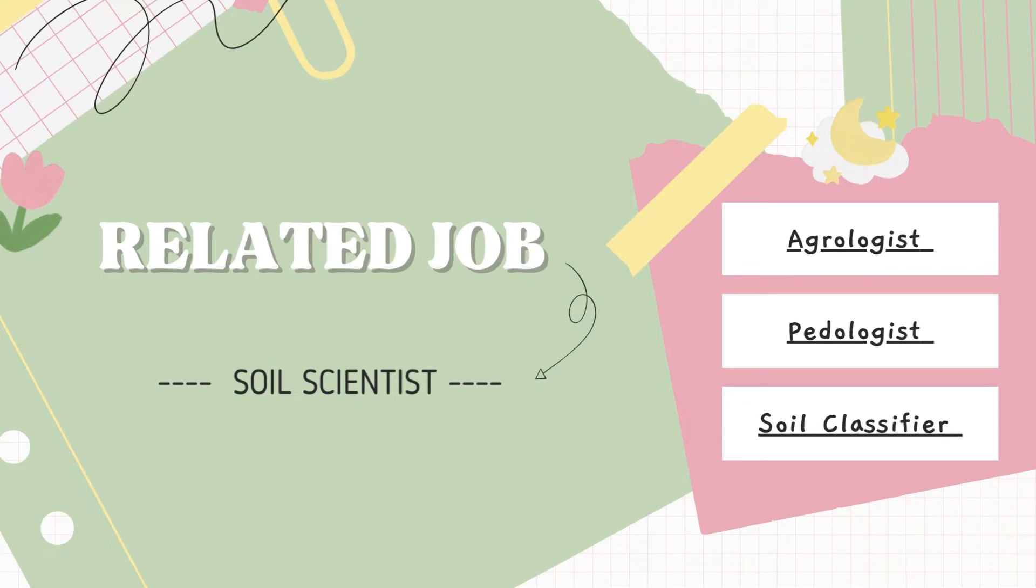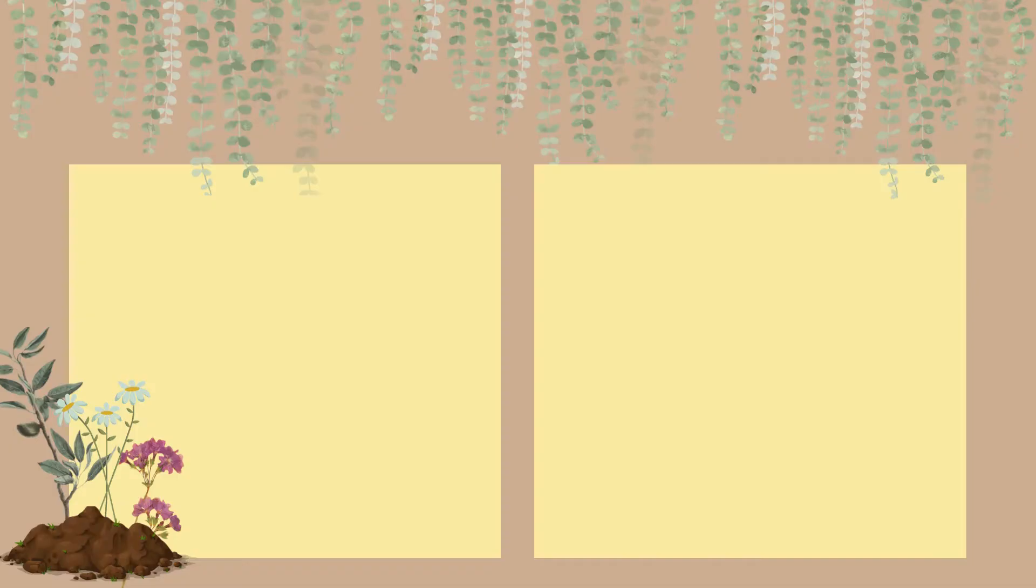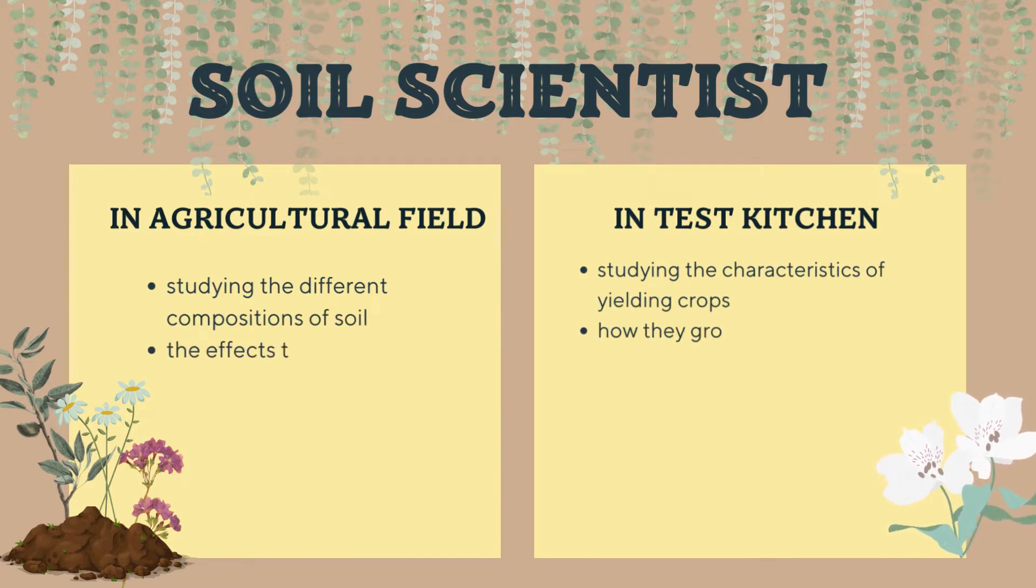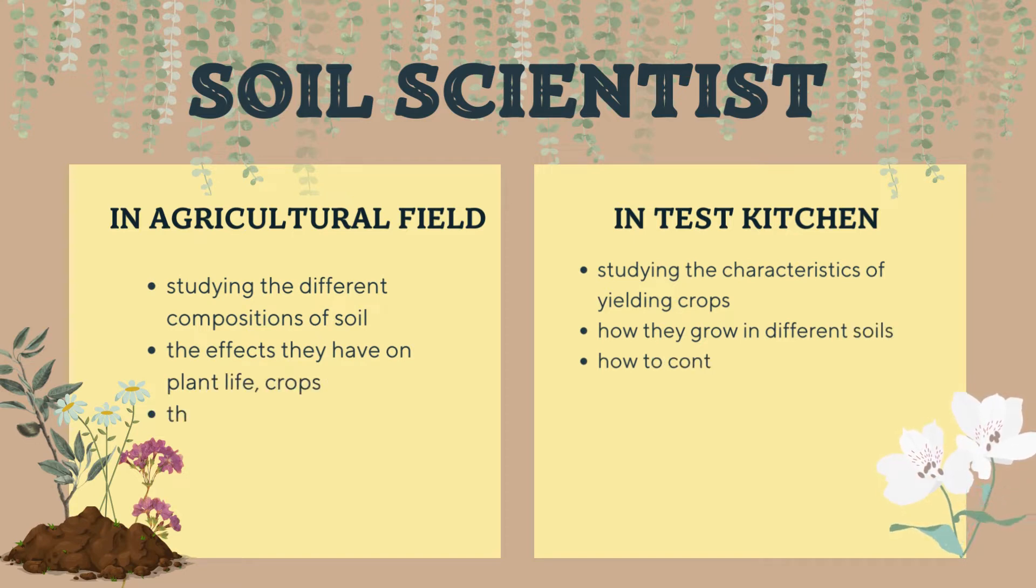There are a lot of careers that are related with microorganisms and plant nutrients. One of them is soil scientists, which are also known as agrologists, pedologists, and soil classifiers. Soil scientists do research on the composition of soil to see how it affects plant growth. Soil scientists who work in the agricultural field study the different compositions of soil and the effects they have on plant life, crops, and the national food supply.